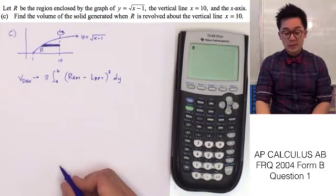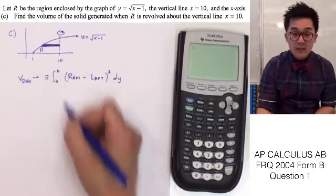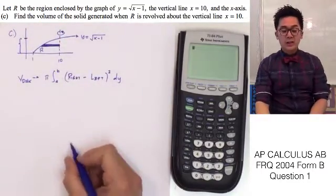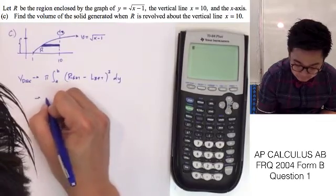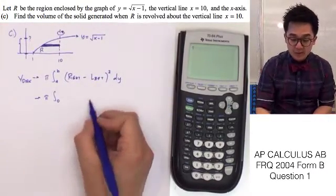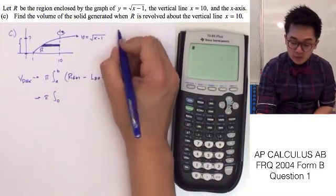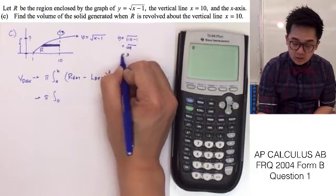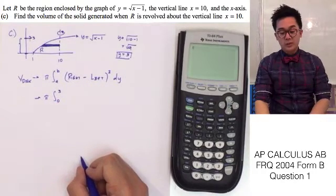The formula for the volume of a disk is pi integrated from A to B. Since we integrate horizontally, it's the rightmost function minus the leftmost function, squared, with respect to y. Since we integrate in terms of y, we no longer use 1 and 10 as limits. The lower limit is 0. To find the upper limit, we plug in x equal to 10: y equals square root of 10 minus 1, which is 9, so y equals 3. We integrate from 0 to 3.